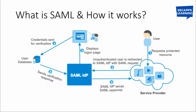SAML is commonly used for web applications only, not for any other authentication. When you open a web application it will ask for your credentials, and after you provide them it will ask for an extra authentication method. If you have enabled mobile OTP or Microsoft Authenticator, you need to approve that request, and then only you will be signed in and get your login page.